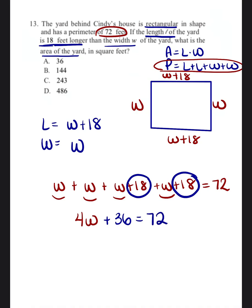So now we're just going to go ahead and solve for that W. The way we solve for the W is by getting everything on the opposite side of the W. So we're going to get rid of the 36 by subtracting 36 from both sides. And we're going to be left with 4W is equal to 36. And then we're going to divide both sides by 4. W is going to be equal to 9.